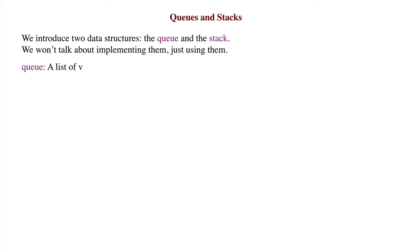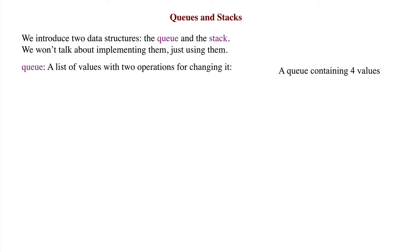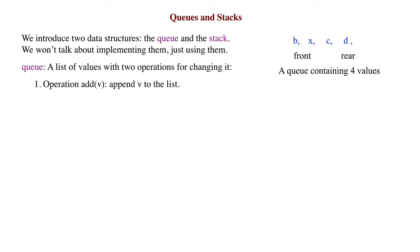A queue is a list of items with two operations for changing it. We show a queue with four values. The two operations are: append element v to the list, and remove the first item in the list and return it.